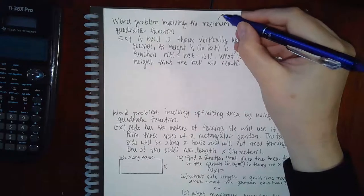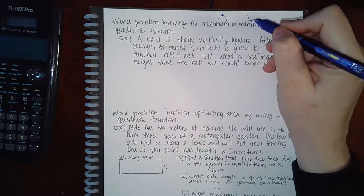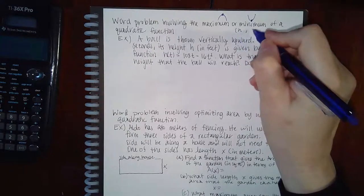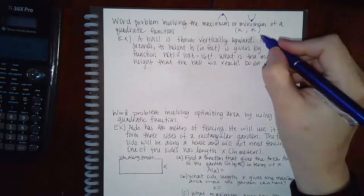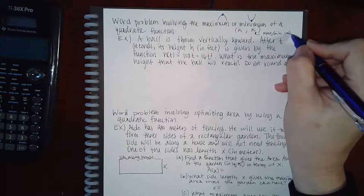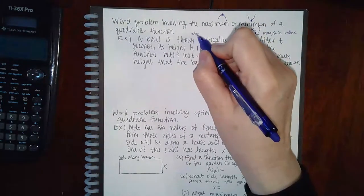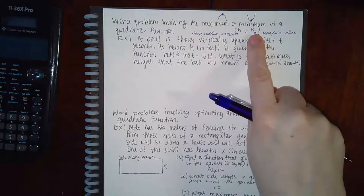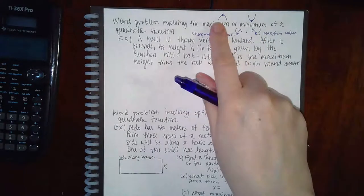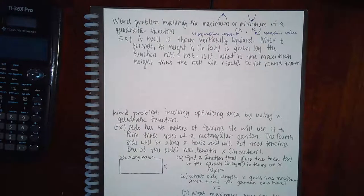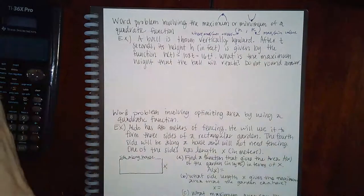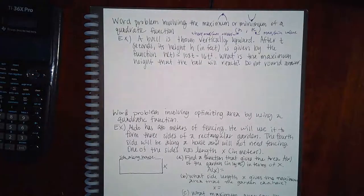Now there are word problems involving maximum and minimum. Maximum occurs when the parabola opens upward — the vertex is at the top. Minimum occurs when it opens downward — the vertex is at the bottom. The k value is the actual maximum or minimum value (the height), while h is where that maximum or minimum occurs (the x-value).